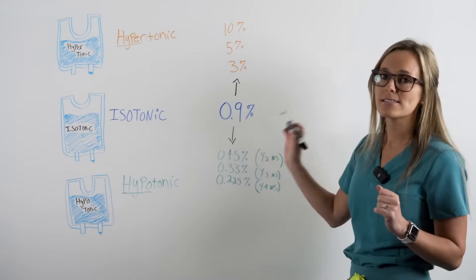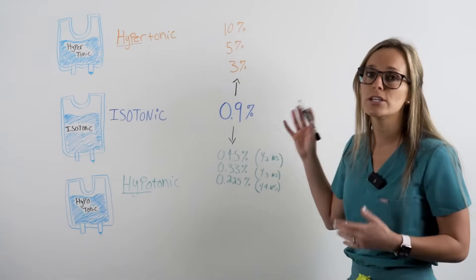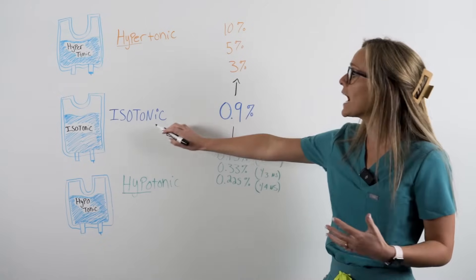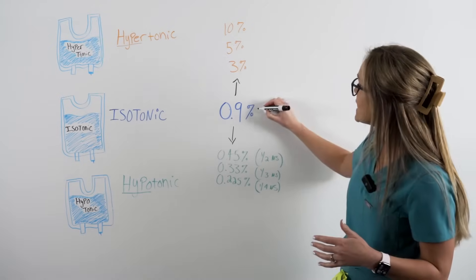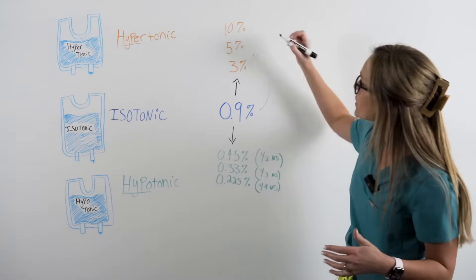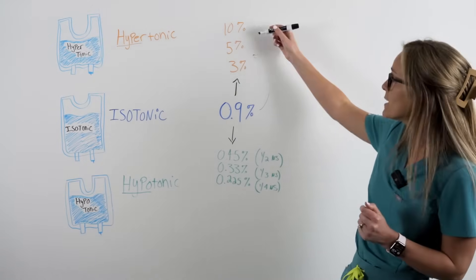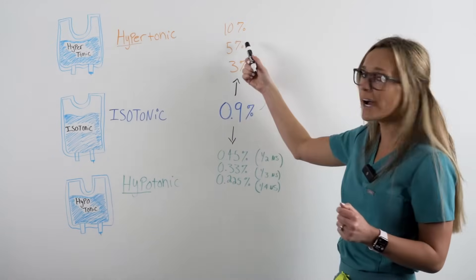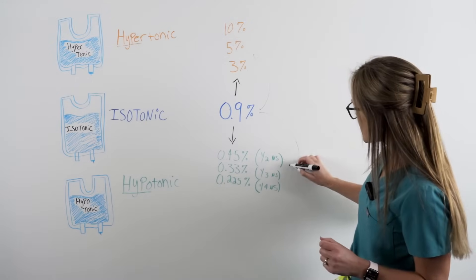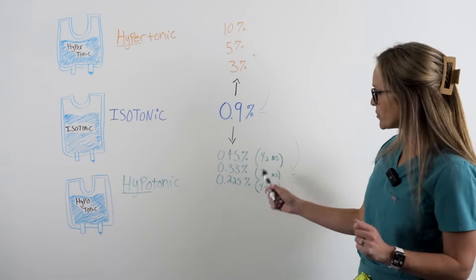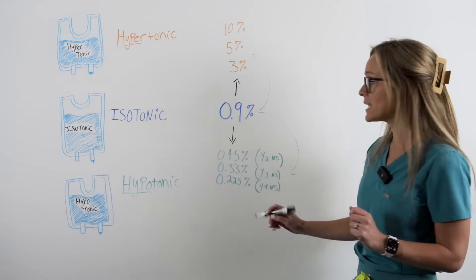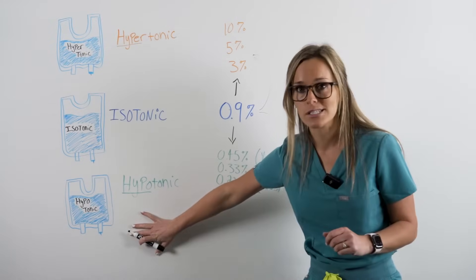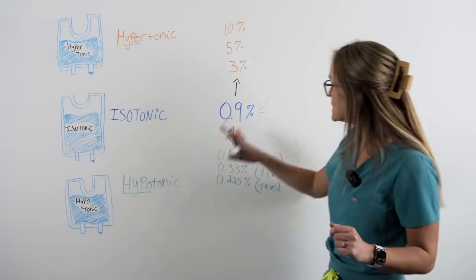So to review, this is our base number, 0.9% sodium chloride. This is an isotonic solution. Anything higher than this number, 3%, 5%, and 10% is considered a hypertonic solution because hyper means higher. And anything lower than this number, like half normal saline, one third normal saline, and one fourth normal saline is considered a hypotonic solution. Hypo means low.